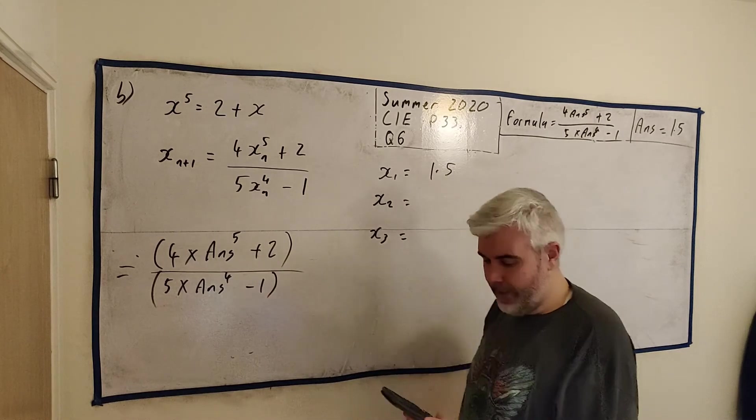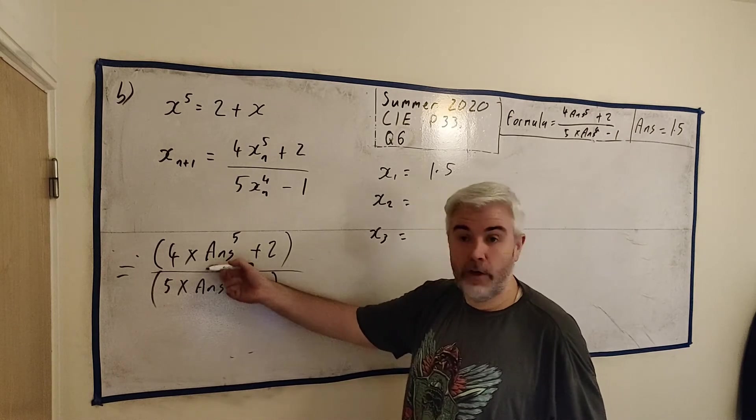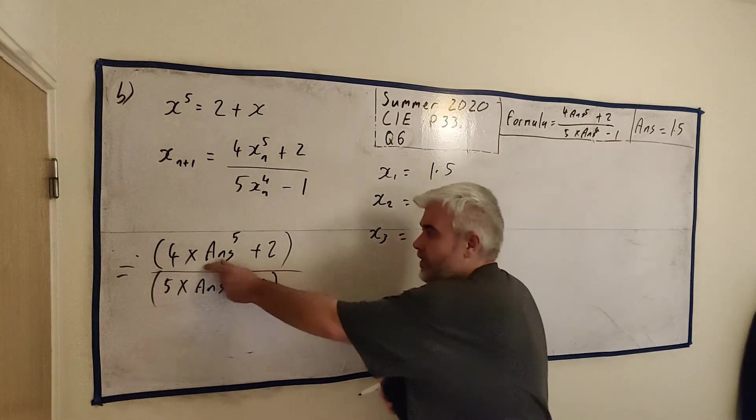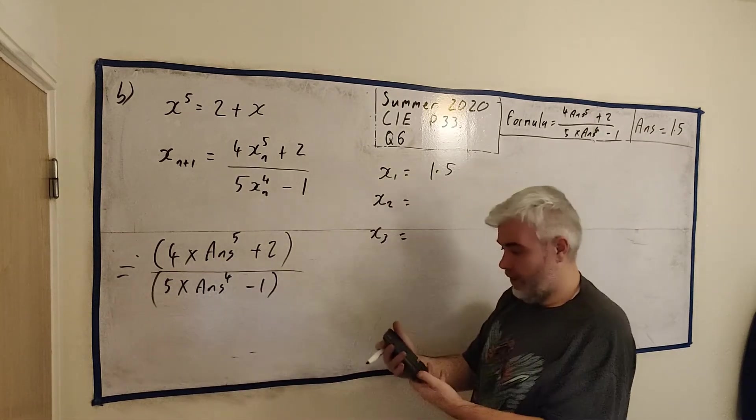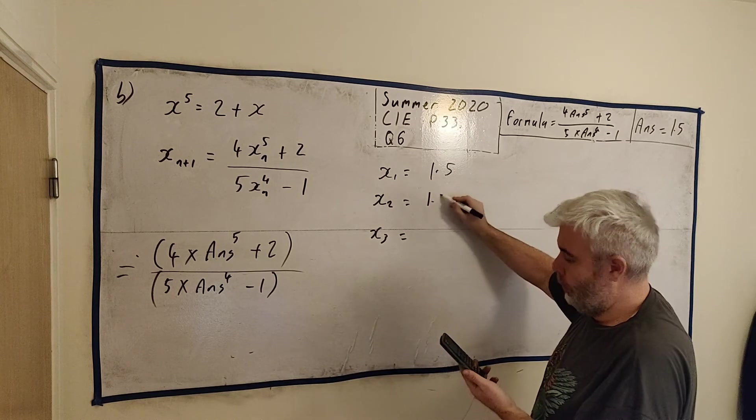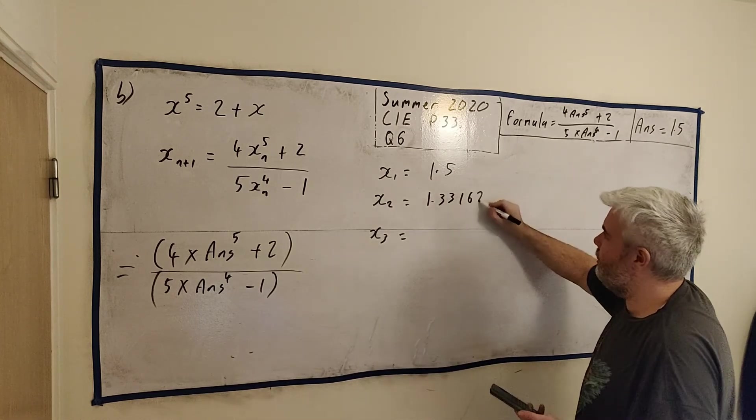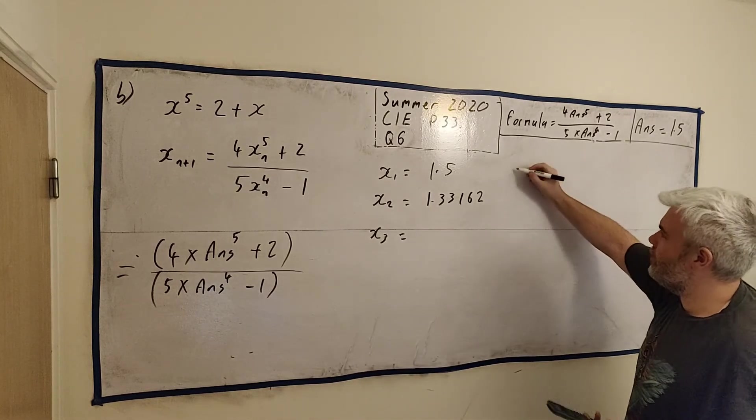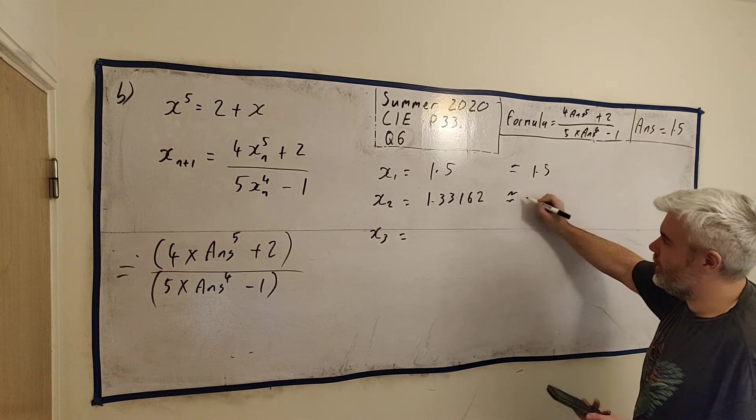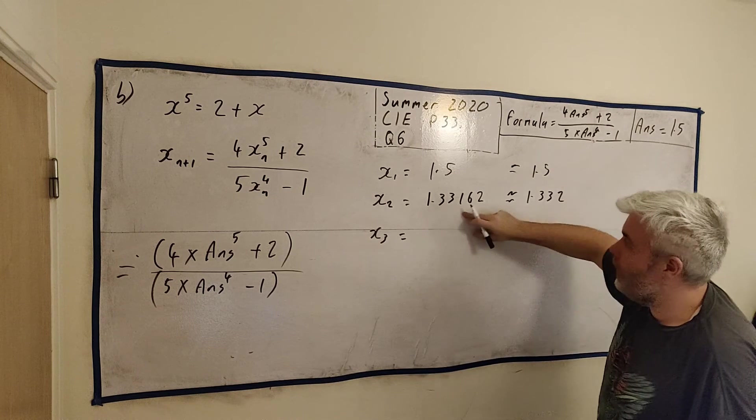And now when I press equals, what's going to happen is, the calculator is going to check what the previous answer was, and that was 1.5, and everywhere it has answer, it's going to call 1.5, so it will spit out the answer here, 1.33162, and round it to five decimal places. This is equal to 1.5, this is approximately equal to 1.332, round it to three.